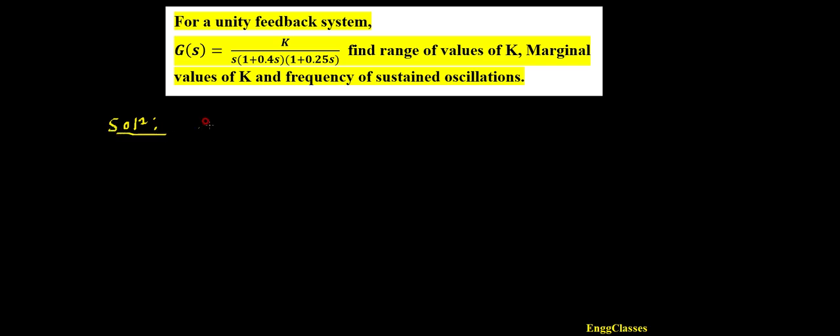Hello everyone, welcome to NG Classes' YouTube channel for a video lecture series in control systems. In this video lecture, we shall consider a numerical for a unity feedback system where G(s) = k / [s(1 + 0.4s)(1 + 0.25s)]. We need to find the range of values of k, the marginal value of k, and the frequency of sustained oscillations.